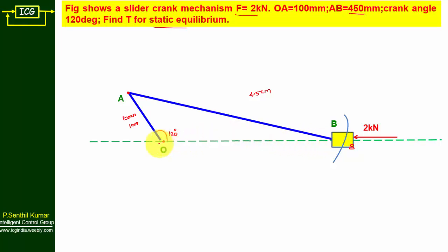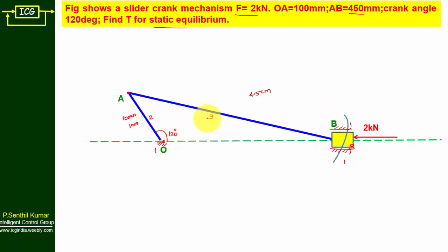There are four parts: link 1 is the fixed link. The slider moves only in the horizontal direction, so there will not be any motion along the vertical direction — this is also link 1. Link 2 is the crank, link 3 is the connecting rod, and link 4 is the slider. The known force is 2 kilo Newton.